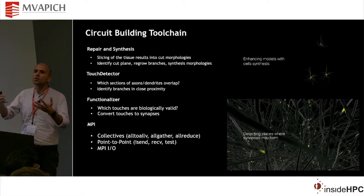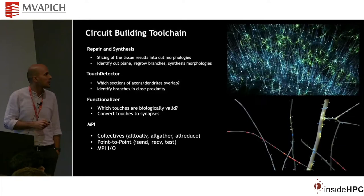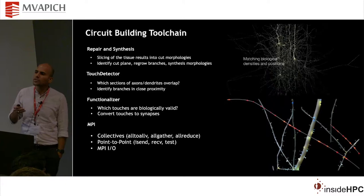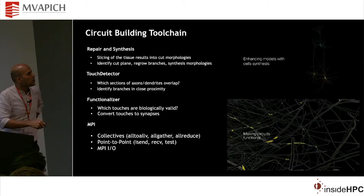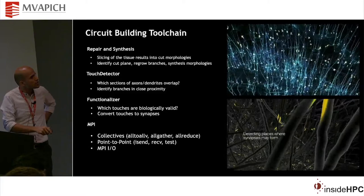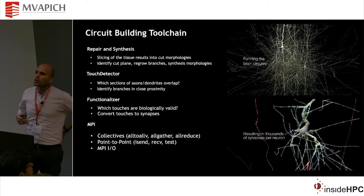Once you have these cells, the next question is which sections of the neurons touch each other — for example, how the axon of one cell connects to the dendrites of another. This is solved by our touch detector software. Not all identified touches are biologically possible, since there are rules governing how neurons from different layers can connect. Those rules are handled by a component called the functionalizer. This movie shows how the touch detector finds touches among neurons in their proximity.